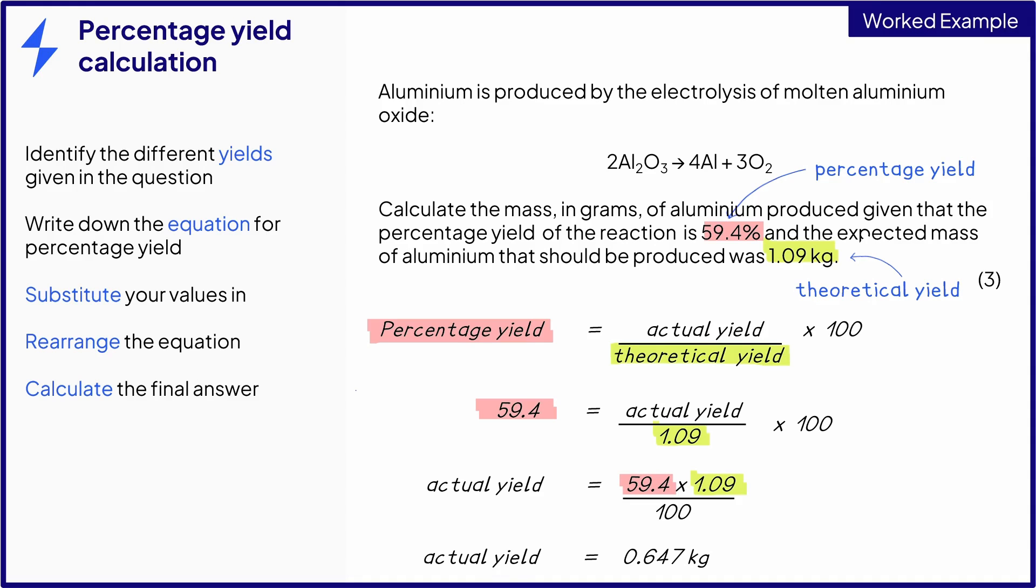Now, remember that the theoretical yield of aluminium was given in kilograms. So the actual yield will also be measured in kilograms. However, the question specifically asks you to give your answer in grams. So you need to convert this value to grams by multiplying it by 1000.